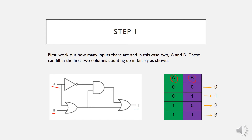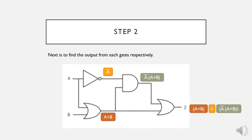We count the combinations by counting up in binary. We have four combinations because we have two inputs — two to the power of two equals four. The count goes from zero, one, two, and three. Each of these decimal numbers is represented by its binary equivalent. The next step is to find the output from each gate, starting from the input side — input A and B — since the inputs are on your left.